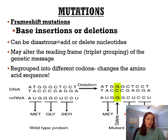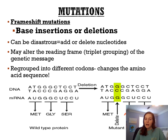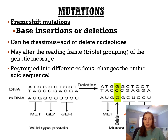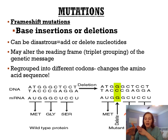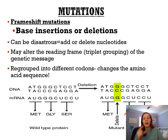The other type of point mutation is frameshift mutations, which are usually more detrimental. Frameshift mutations occur when you add or delete nucleotides — this changes most codons after the insertion or deletion, altering almost every amino acid after that point. Since mRNA is read in codons (every three bases), deleting or adding a base shifts everything downstream. This is called altering the reading frame, which is why we call these frameshift mutations.